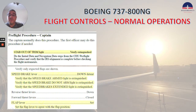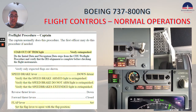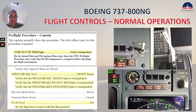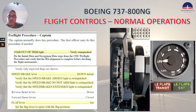Then we continue to the pre-flight procedure for the captain. The captain needs to check that the step out of trim light is extinguished. Speed brake lever down detent. Verify that the speed brake armed light, speed brake do not arm light, and the speed brakes extended lights are extinguished. Flap lever set — set the flap lever to agree with the flap position.